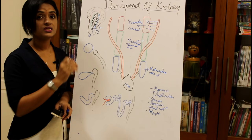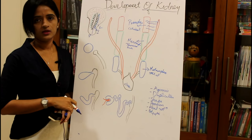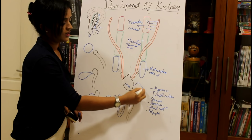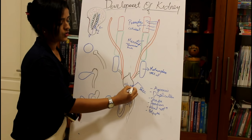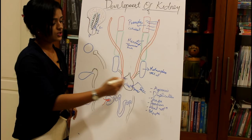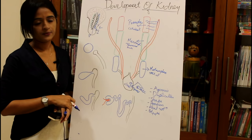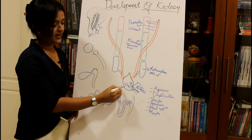The cloaca is the dilated distal part of the gut. It is divided into two parts: the primitive rectum and the urogenital sinus. These are the two parts derived from the cloaca, and it is from the urogenital sinus that we have the development of the urinary bladder.